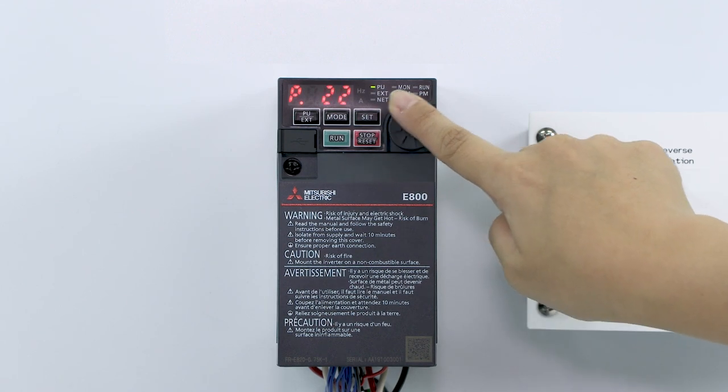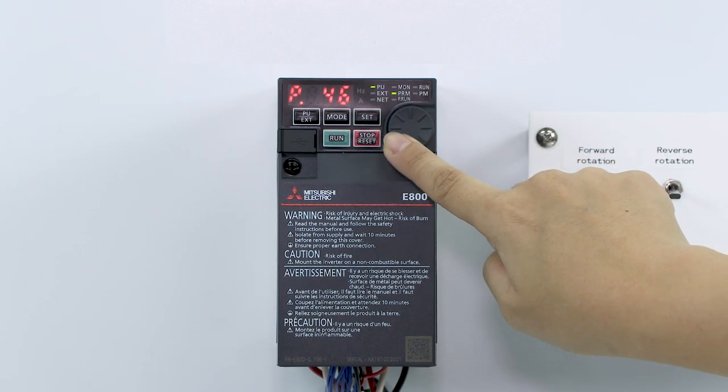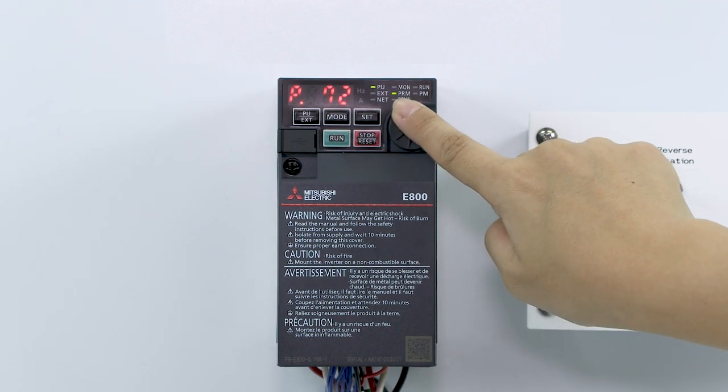To select PU operation mode, set parameter 79 to 1.